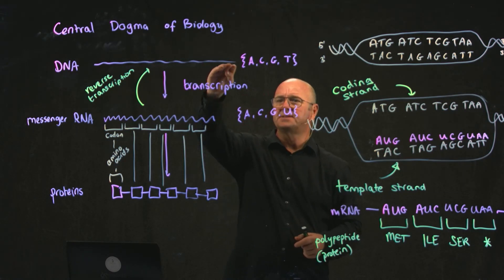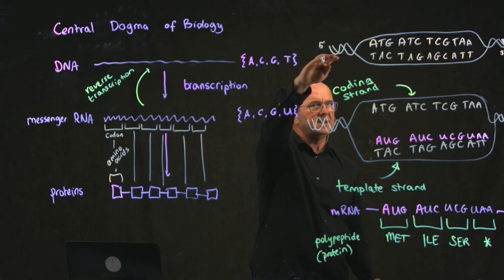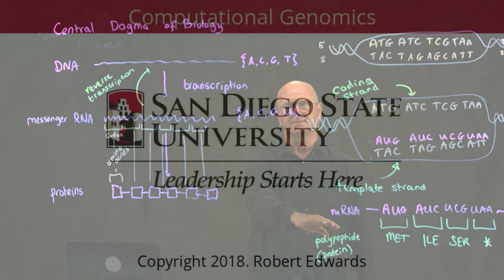So this is how we go from DNA to RNA to protein. From DNA we have our coding strand, our template strand, we get our mRNA, we get our protein sequence down the bottom.